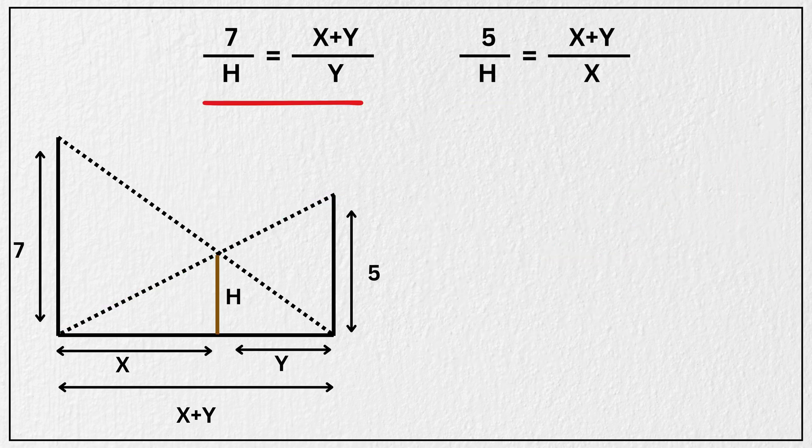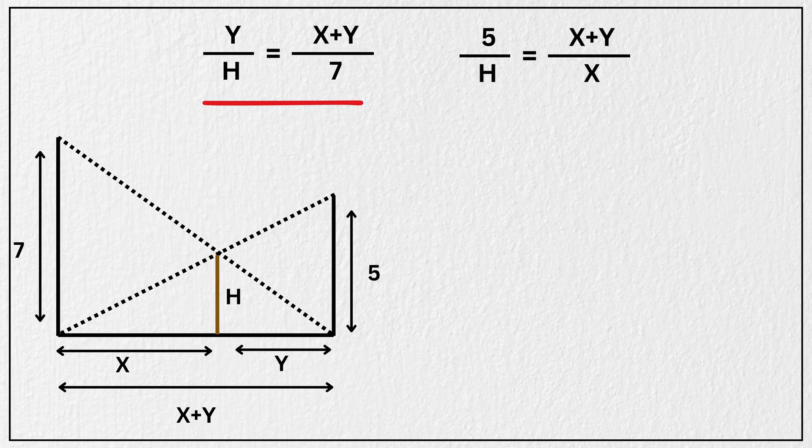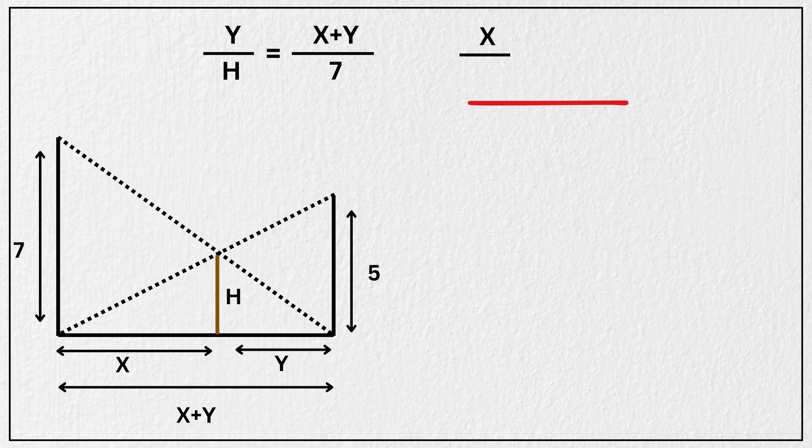from the first we can write, y divided by h is equal to x plus y divided by 7. From the second we can write, x divided by h is equal to x plus y divided by 5. Now adding both equations,